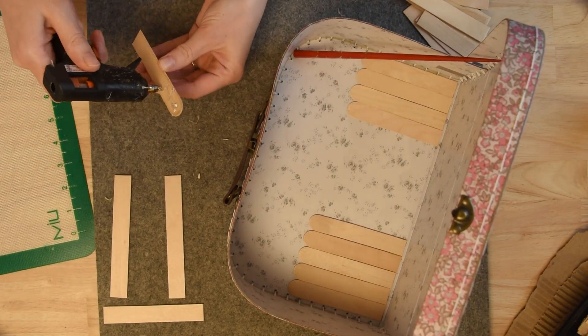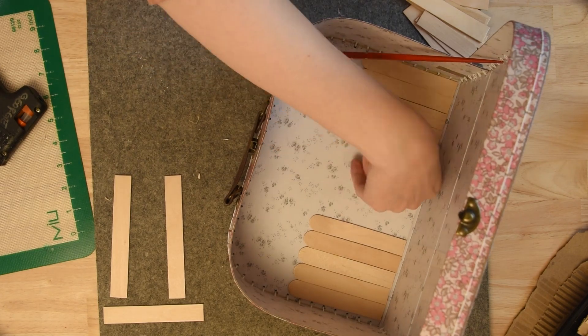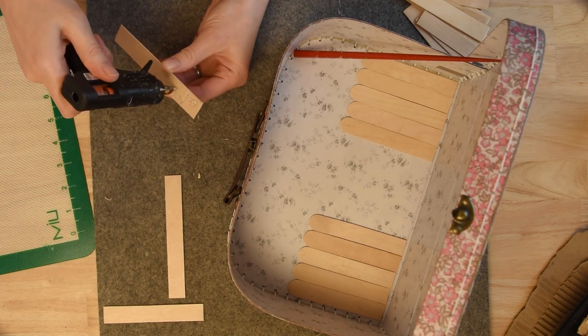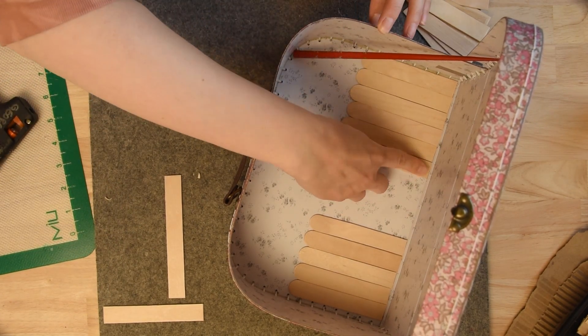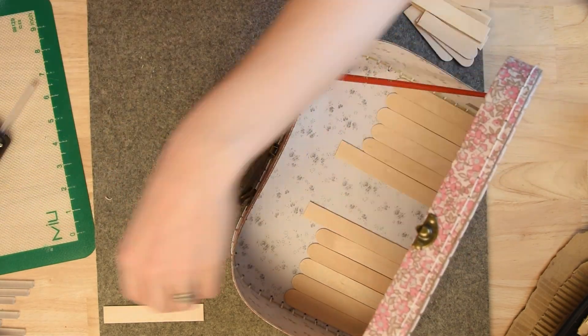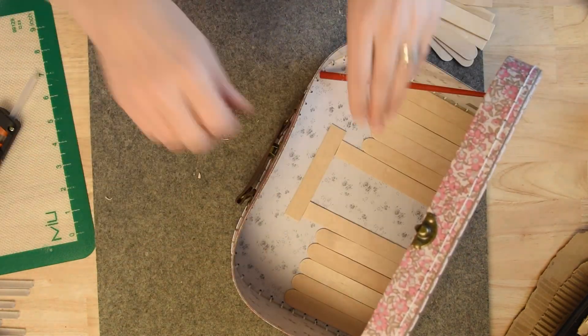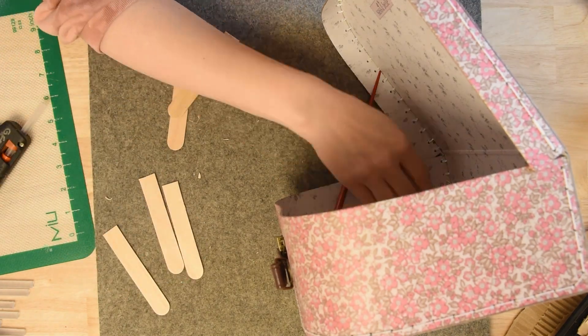I'm just going through and cutting these popsicle sticks to size. I'm gonna have a little bit of a garden gate in the center, so that's what those taller ones are.